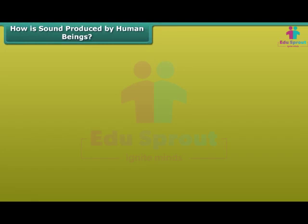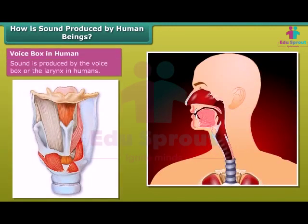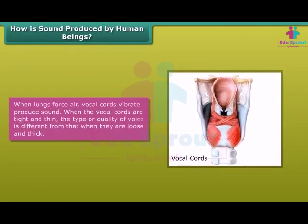How is sound produced by human beings? Sound is produced by the voice box or the larynx in humans. The part which moves when you swallow is known as the voice box, which is at the upper end of the windpipe. Two vocal cords are stretched across the voice box. When lungs force air, the vocal cords vibrate, producing sound. When the vocal cords are tight and thin, the type or quality of voice is different from when they are loose and thick.